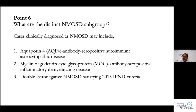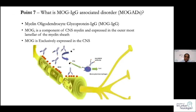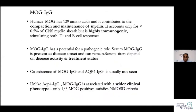The MOG antibody doesn't currently factor into the NMO criteria, but separate criteria for MOG are being worked on and will be available soon. What is MOG-associated disorder? Myelin oligodendrocyte glycoprotein is a component of CNS myelin. It accounts for only about 0.5% of myelin protein but is highly immunogenic and exclusively expressed in the CNS, giving it a potential pathogenic role. Serum titers depend on disease activity and treatment status. Interestingly, these two antibodies do not coexist in the same patient.